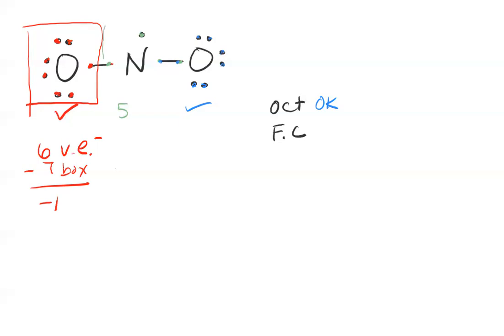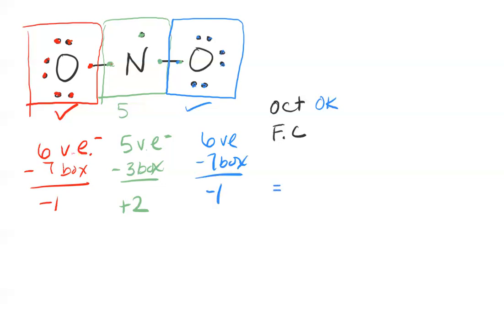My nitrogen, I'm going to draw that box here. I've got five valence electrons and I've got one, two, three, so I subtract three box electrons and I get a plus two formal charge. My last oxygen is six valence electrons minus seven in the box, I get a negative one. All of those formal charges add up to zero, which is perfect because that's the charge of the molecule.